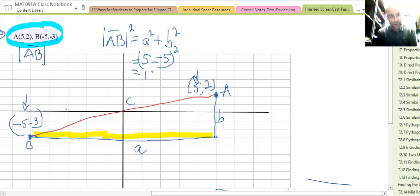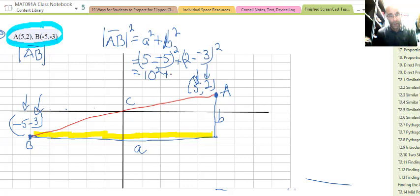And that part comes to 5 - (-5) is 5 + positive 5 and that becomes 10, so it's 10². The b part, this bit, let's see, it is the top one which is 2 minus the bottom one which is -3. So it's plus 2 - (-3), all squared. 2 - (-3) is 2 + positive 3, so that's 5².